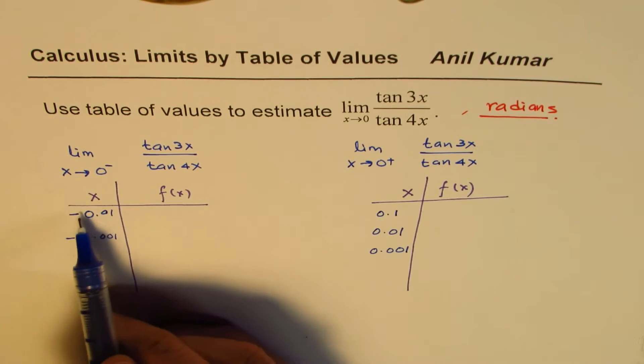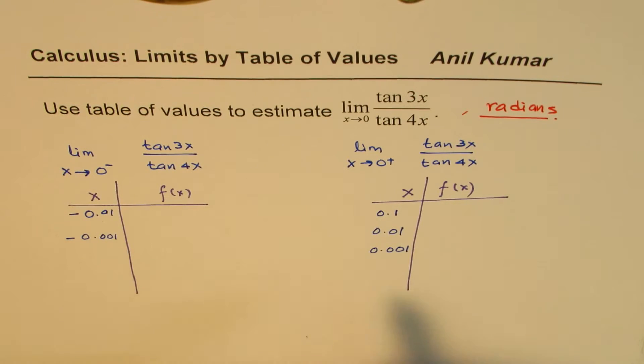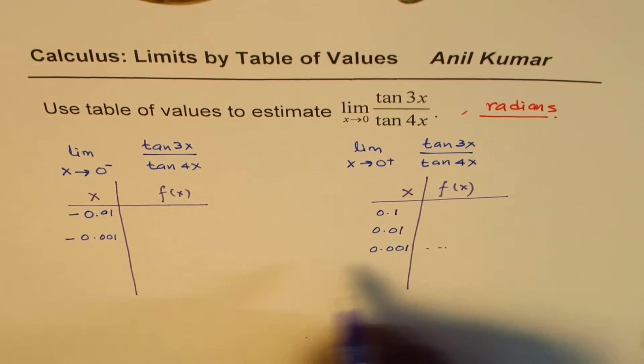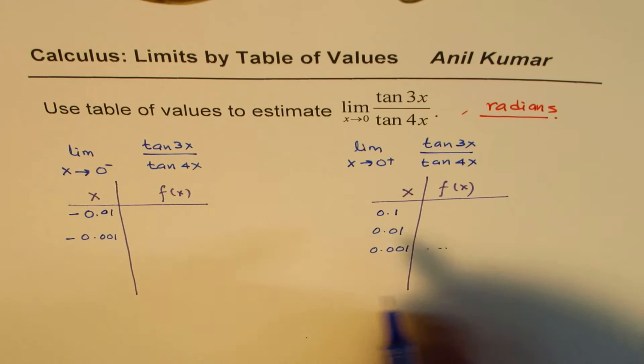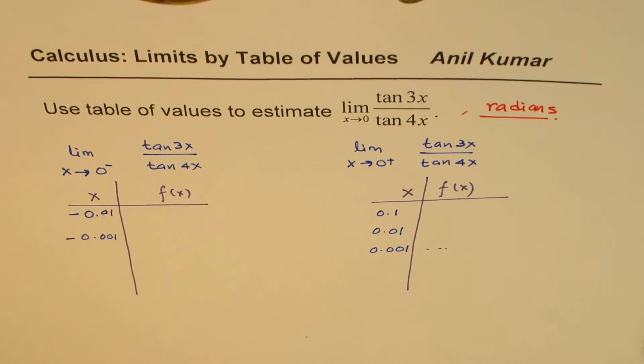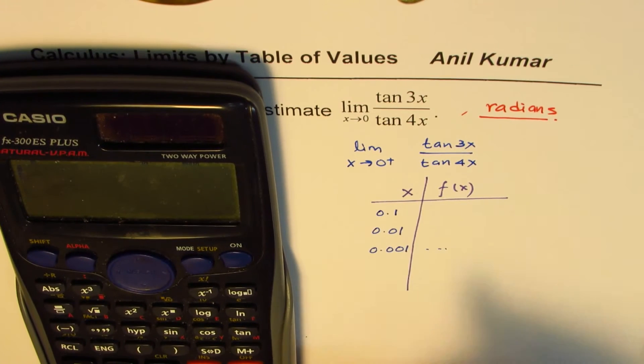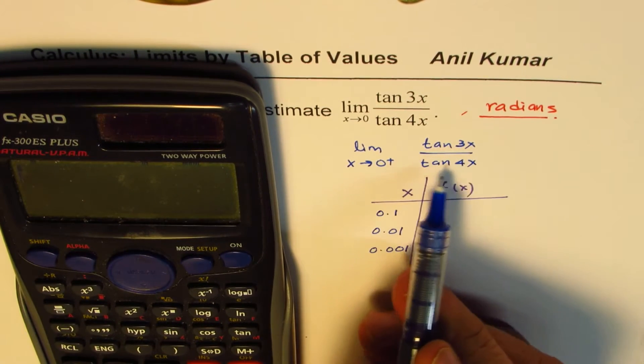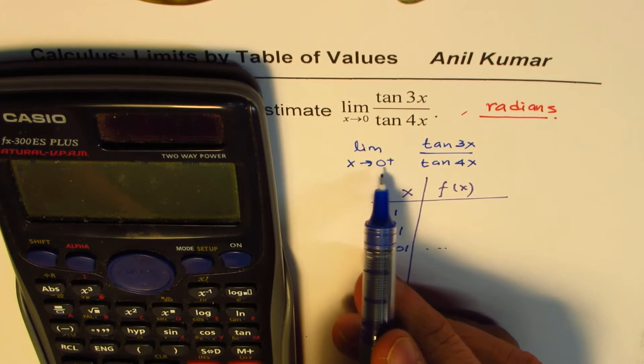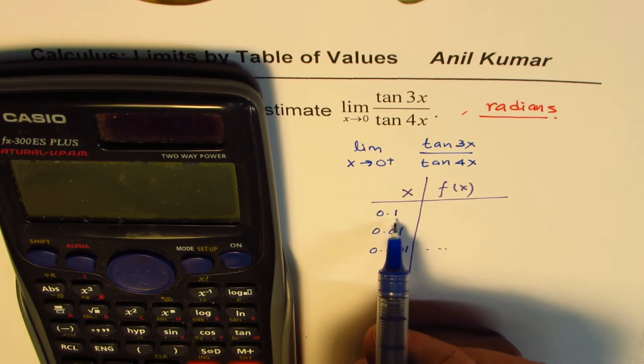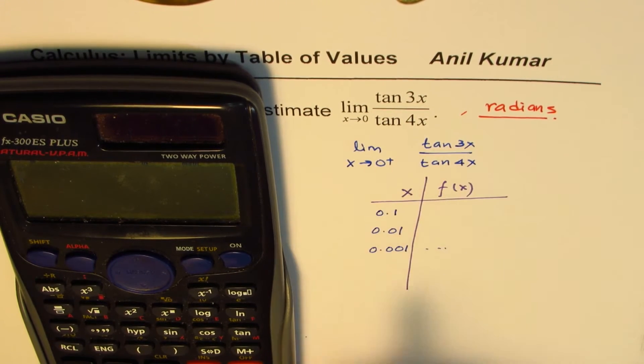You can start with minus 0.1, actually. Anyway, what I will do here is just calculate one value for each, and then see what happens. At the most, two. So let's do that. So let me begin with the right side. So we are approaching tan 3x over tan 4x from the right side. We will substitute 0.1 for x.